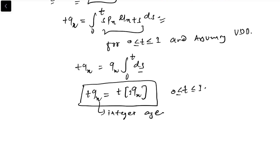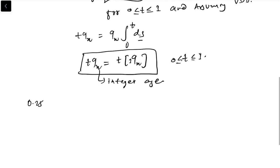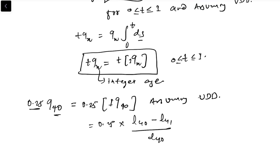Let's look at one example. Suppose you are given 0.25 q40. Here you can see that t is between 0 to 1 and x is the integer age, so we can directly apply the formula: 0.25 times 1 q40 assuming UDD. Now you can solve this: 0.25 times (l40 minus l41) divided by l40. We can look at these values from the table.